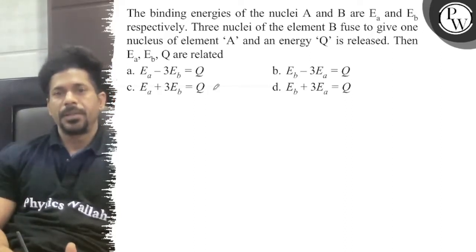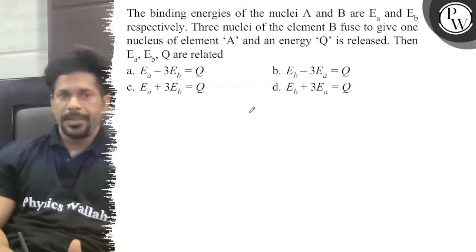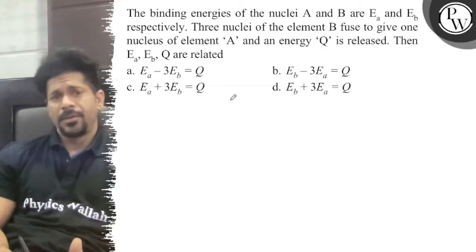The binding energies of the nuclei A and B are EA and EB respectively. Three nucleus of the element B fuse to give one nuclei of element A and an energy Q is released. Then EA, EB, and Q are related. So we have four options shown in some relation.